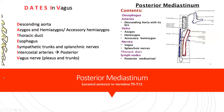In the posterior mediastinum, to remember what's there, use the mnemonic 'Dates in Vegas': Descending aorta, Azygous and hemiazygous veins, Thoracic duct, Esophagus, Sympathetic trunks, Splanchnic nerves, Intercostal arteries, Vagus nerve. I don't think it's super important to know the order; the structures are asked more in relationship to what the sympathetic trunks or splanchnic nerves are innervating, or what these veins communicate with.